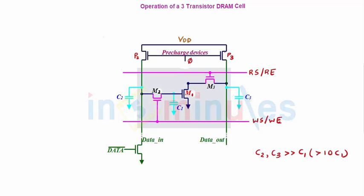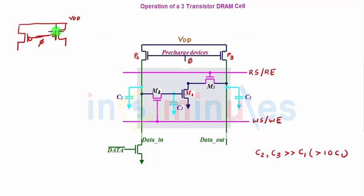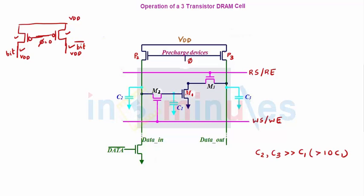Let's first see the basic diagram. When you see a lot of transistors on the screen you tend to get confused, but the diagram is very straightforward. We have already studied in SRAM that there is something called a pre-charged circuit where there are two PMOSs connected back to back. When the input phi equals 0, both PMOSs turn on and charge the output lines to VDD — in SRAM we call these bit and bit bar.